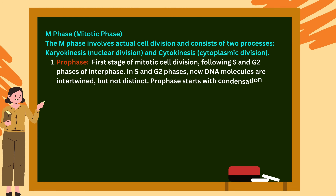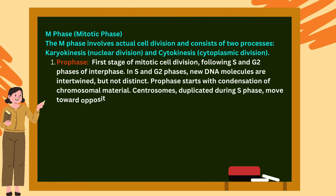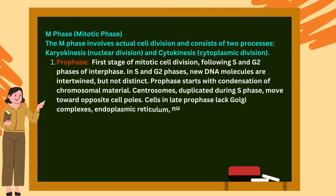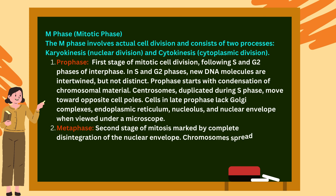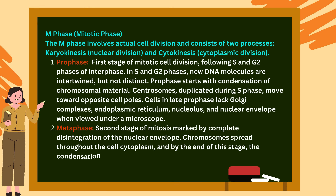First is prophase — the first stage of mitotic cell division, following S and G2 phases of interphase. In S and G2 phases, new DNA molecules are intertwined but not distinct. Prophase starts with condensation of chromosomal material. Centrosomes, duplicated during S phase, move toward opposite cell poles. Cells in late prophase lack Golgi complexes, endoplasmic reticulum, nucleolus and nuclear envelope when viewed under a microscope.